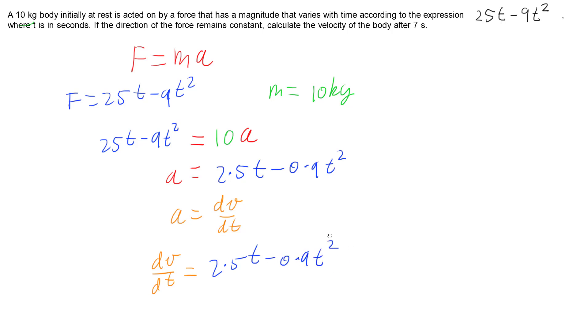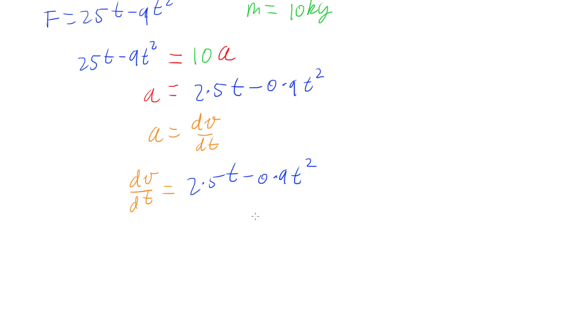And so now if we treat this as a differential equation, we can multiply the dt over this side and integrate both sides so we'll have dv equals 2.5t minus 0.9t squared multiplied by that dt. And we can integrate both sides.